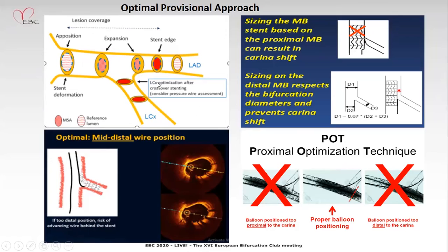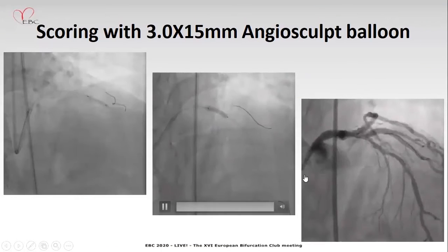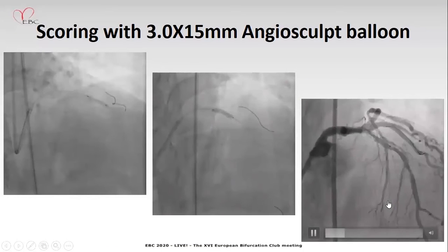After stenting, any side branch compromise can be assessed by FFR or imaging. Stent selection should be based upon the main branch distal diameter — otherwise, choosing based on the proximal main vessel can shift the carina and compromise the side branch. When performing the POT, do not extend beyond the carina tip angle; keep it just proximal to the carina tip. The entire LAD, wherever tight stenosis was present, was dilated adequately.